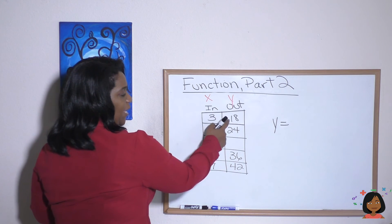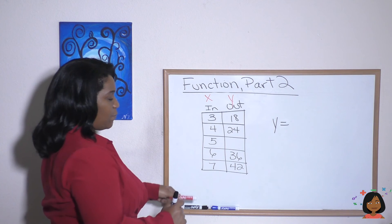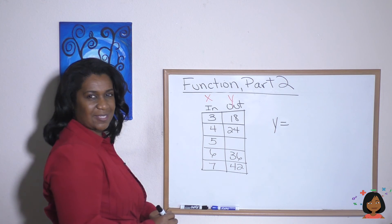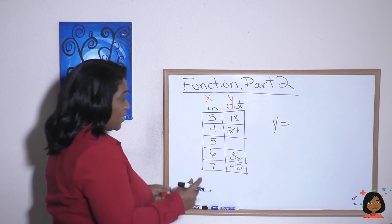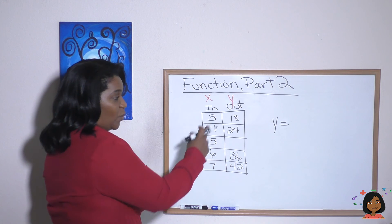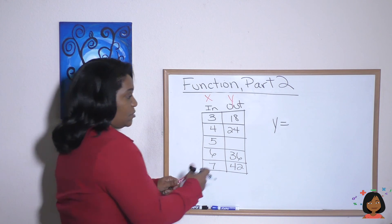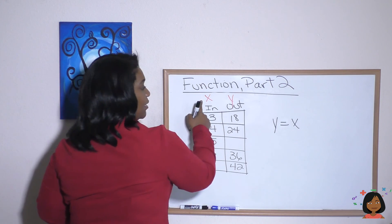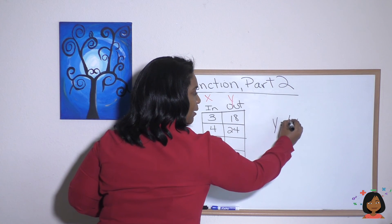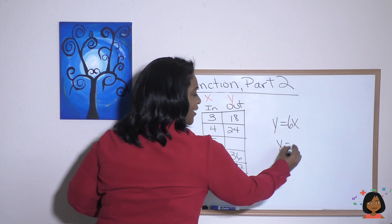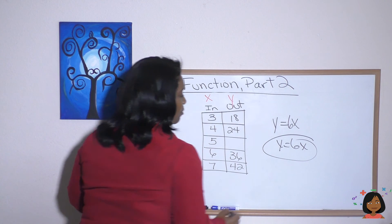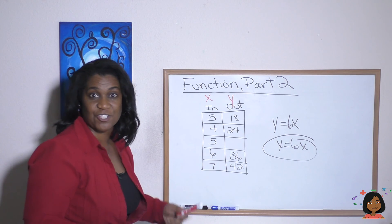The rule here is three to eighteen, four to twenty-four, six to thirty-six. It looks like we are multiplying by six, right? So we could say that Y equals taking our X column and multiplying it by six. So Y equals six X would be the equation for this function.